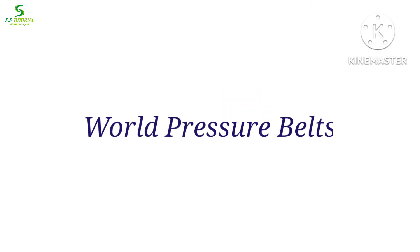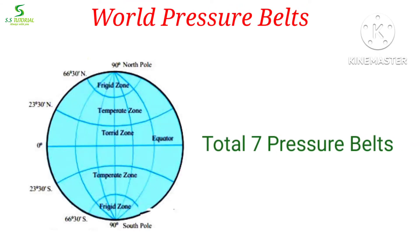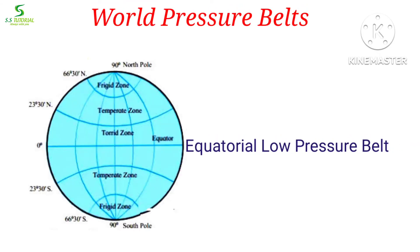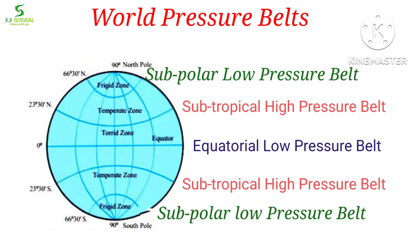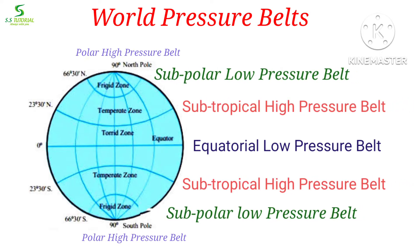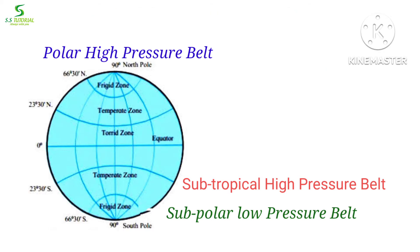On the earth's surface there are seven pressure belts. They are the equatorial low pressure belt, subtropical high pressure belt, subpolar low pressure belt, and polar high pressure belt. If you look at the diagram, you will find a pattern of alternate high and low pressure belts over the earth.